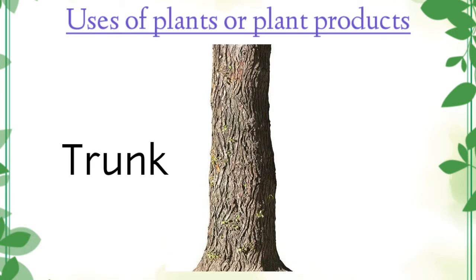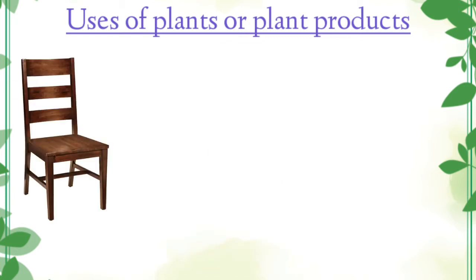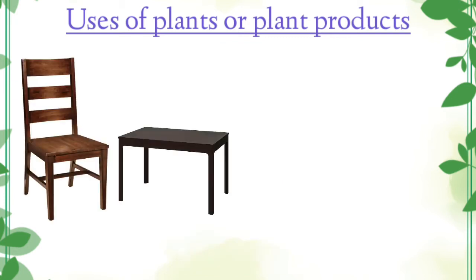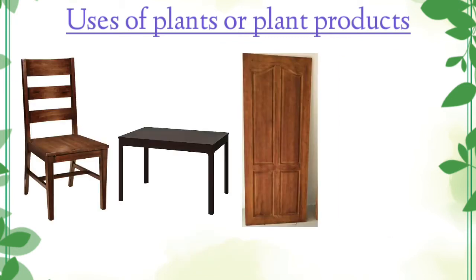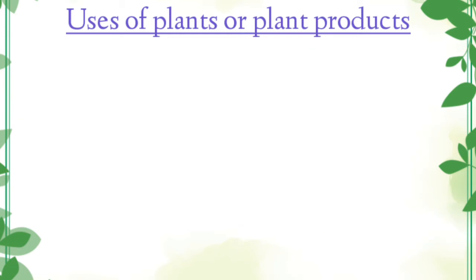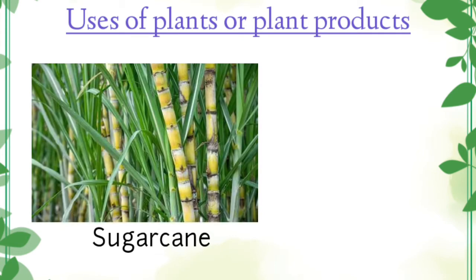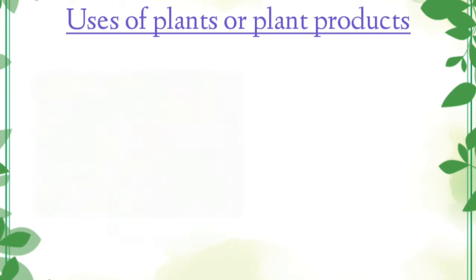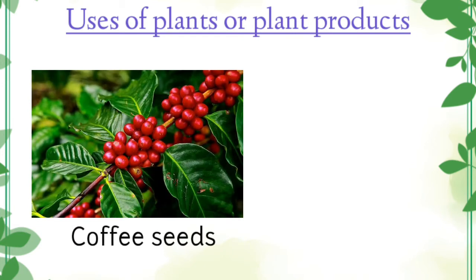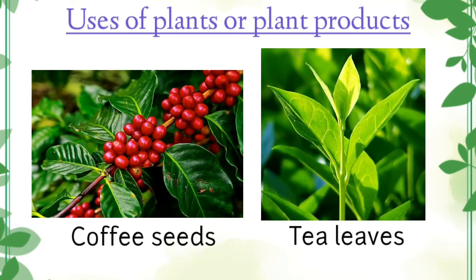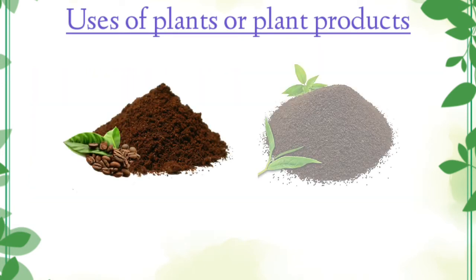The trunk of a tree gives us wood. Wood is used to make furniture such as chairs, tables, doors, cupboards, etc. Pulp from bamboo tree gives us paper. Sugarcane plant gives us sugar. Coffee seeds and tea leaves are used for making coffee and tea powder.